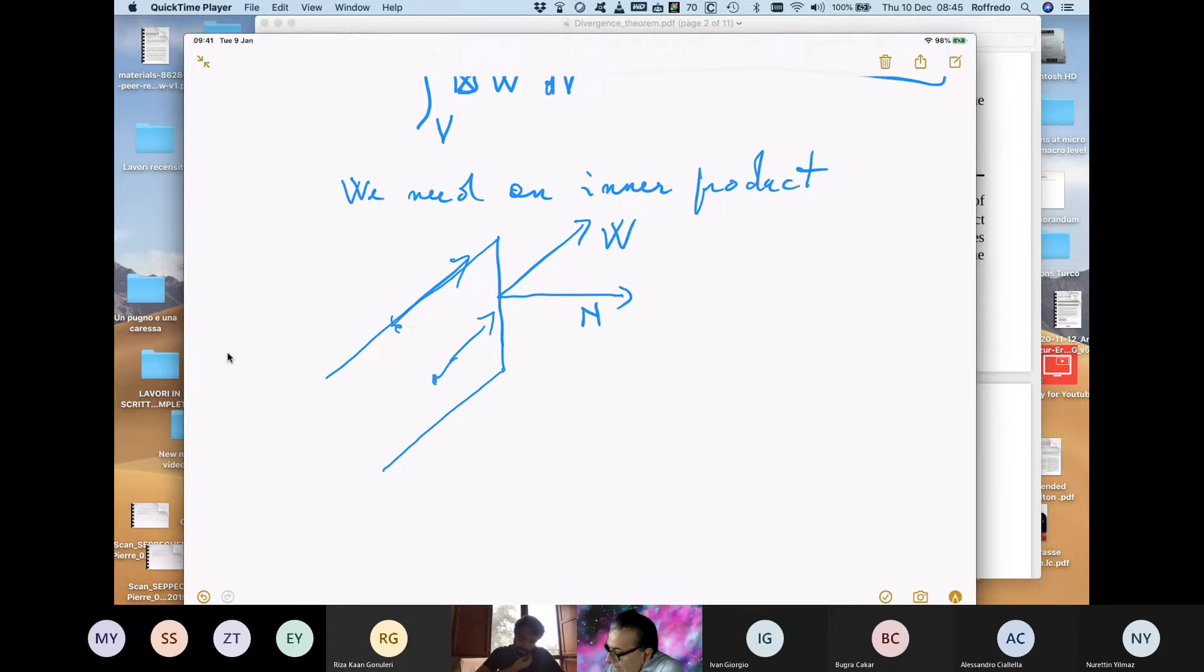dT, so this is a length. W is interpreted in this context as a velocity, so this gives you a length, which is this one, times the area.